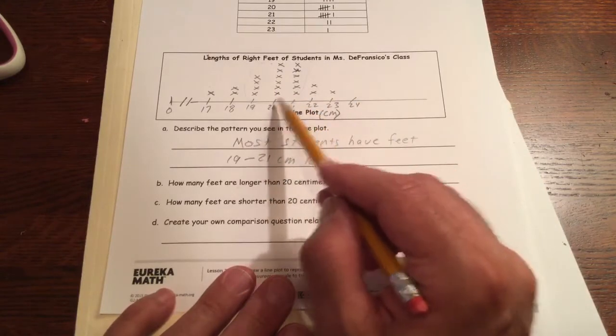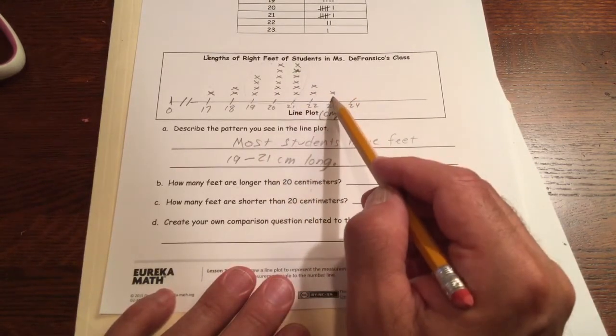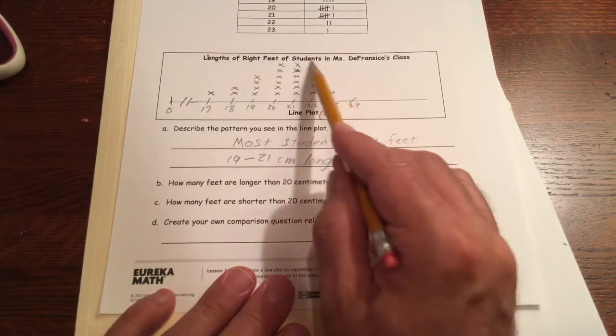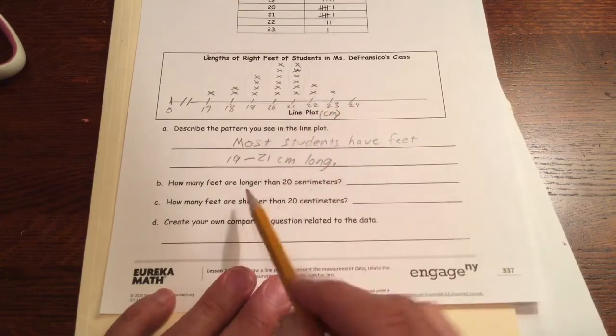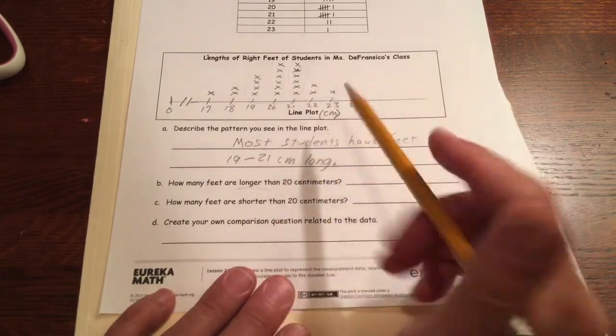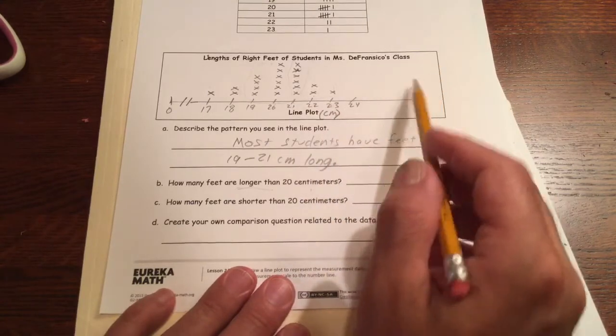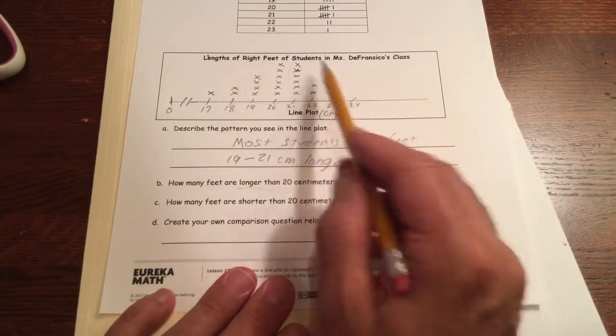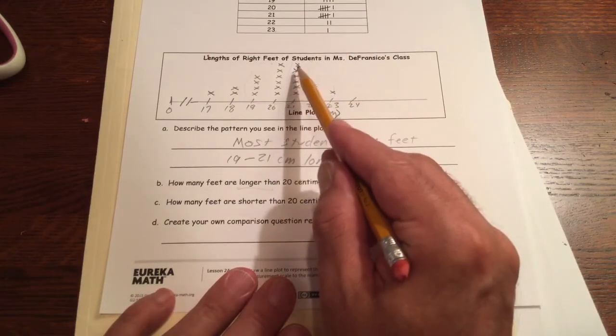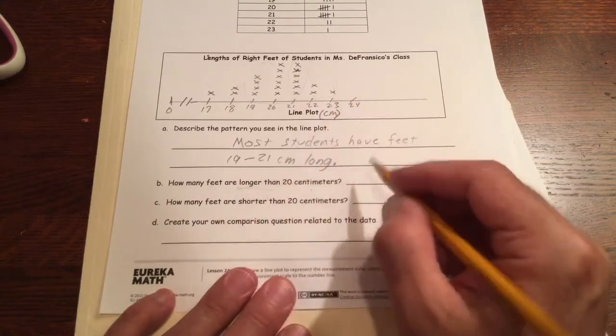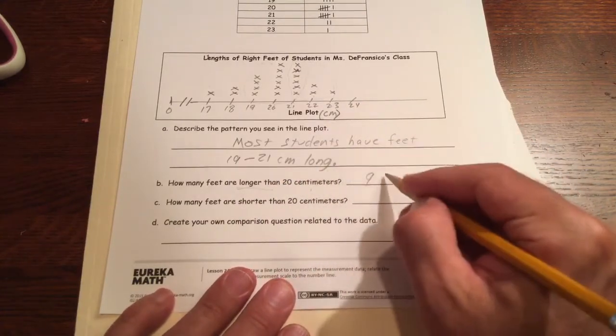How many feet are longer than 20 centimeters? Well, you could look at this and say, well, 21 they're longer, but 22 is also longer and so is 23. So we're going to count all of those, but don't count 20 because those are the same as 20. We only want the ones that are longer than 20. So we want the 21s, the 22s, and the 23s. And there's nothing else that's bigger than that. So we're just going to count all of these X's because each one is one student. One, two, three, four, five, six, seven, eight, nine. Nine feet. Actually, they're feet, not students. So that's nine feet.